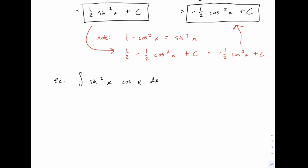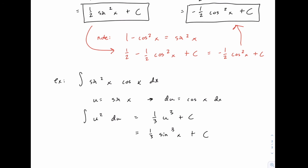Let u equal sine of x, which means du equals cosine of x times dx. We can substitute quickly and get u squared du, which integrates to one-third u cubed plus c. Substituting back, we get one-third sine cubed of x plus c. What we're noticing is that there's a lone single power of cosine that we set aside to serve as du, and once we do, u has to be sine of x for du to be cosine of x. Keep that in mind as we go through more examples in the next video.